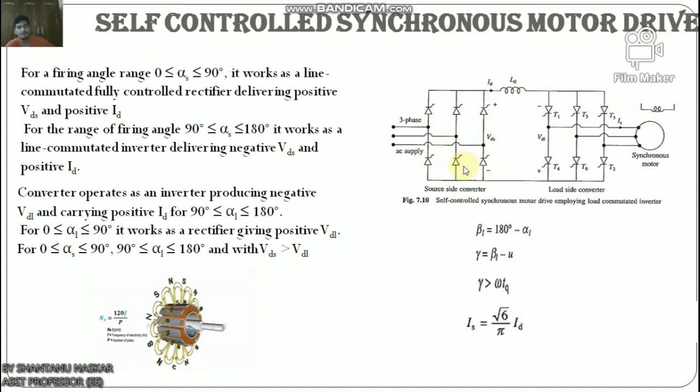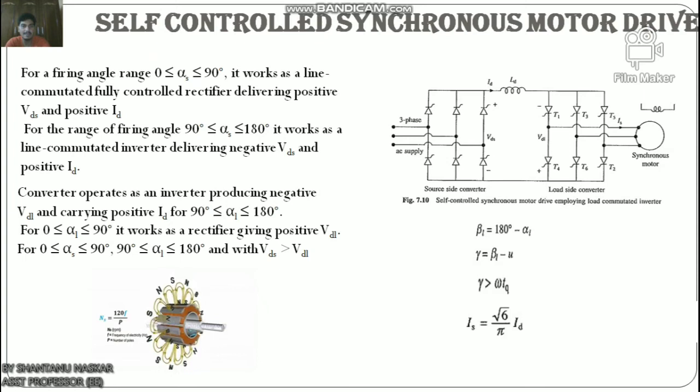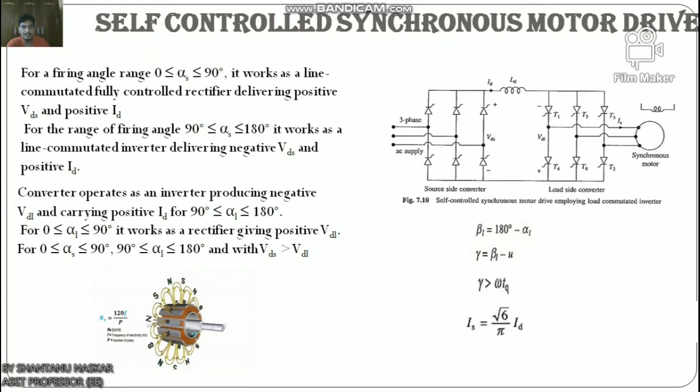The magnitude of torque depends on Vds and Vdl. Speed can be changed by controlling the line-side converter firing angles. When working as an inverter, the firing angle must be less than 180° to account for commutation overlap and thyristor turn-off time. It is common to define the commutation lead angle for the load-side converter as β1 = 180° − α1.